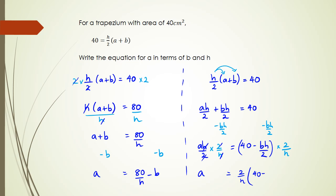Now you might be wondering why these two answers are not the same. Well, they are. If you think about it, if you simplify this, 2 times 40 will become 80 over h.